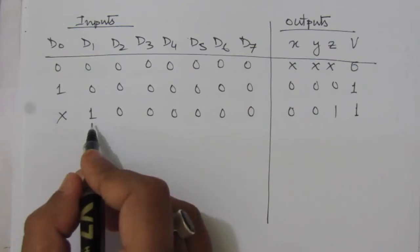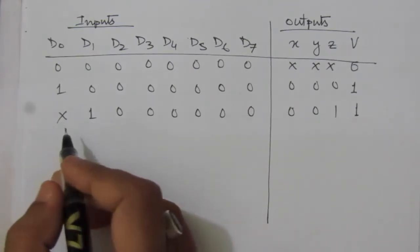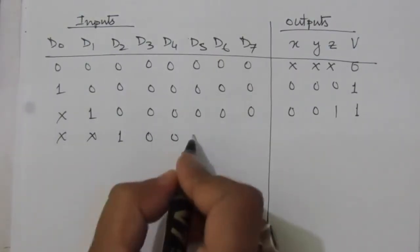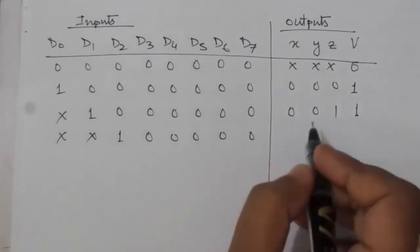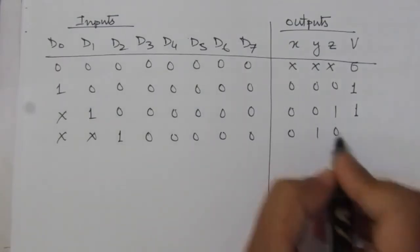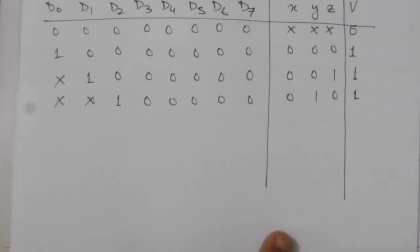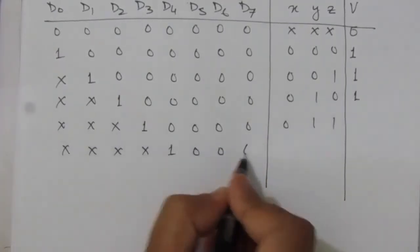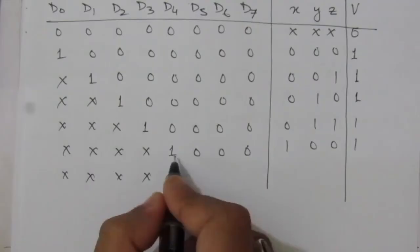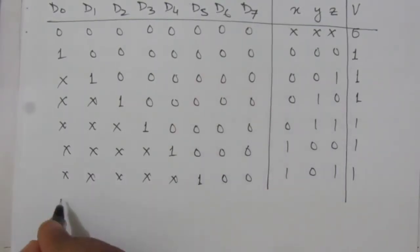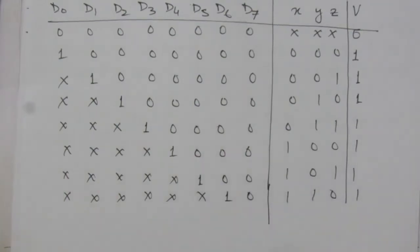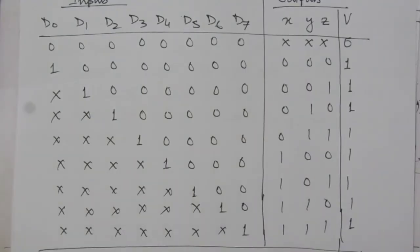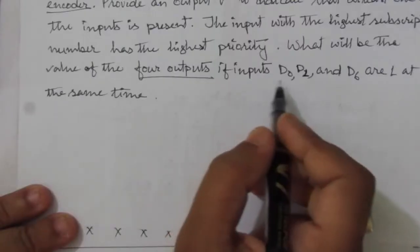We continue this pattern — for each higher-priority input being one, the output reflects its binary code and V equals one. The don't-care conditions increase as we move to higher-subscript inputs. For example, when d4 is one the output is one zero zero, and V equals one. Let me write all of them in the table.